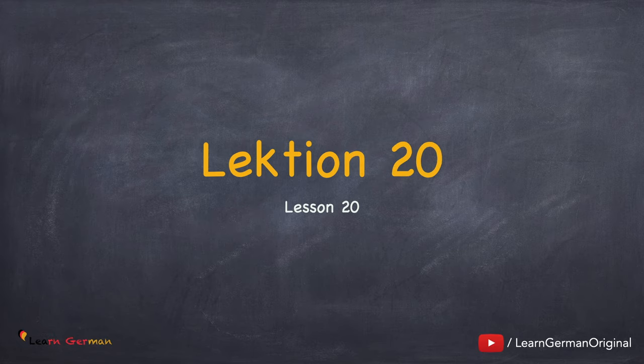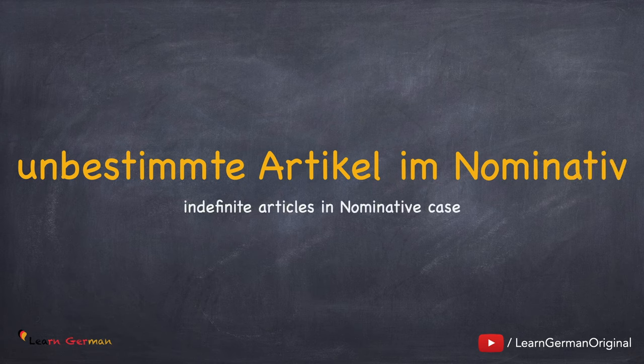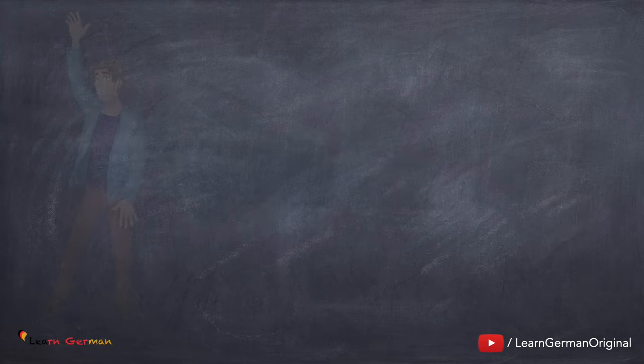Lektion 20 – Unbestimmte Artikel im Nominativ. To be able to understand indefinite articles in this chapter, it is very important that you have learned the definite articles that we did in the previous chapter. Now let's do a few sentences to understand them.